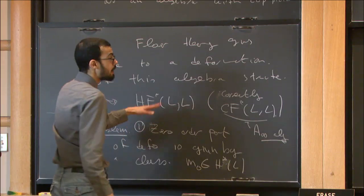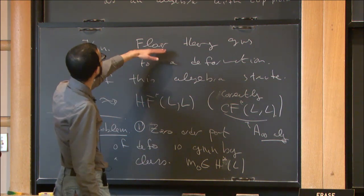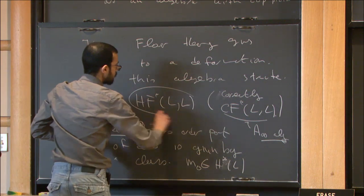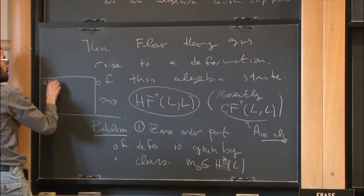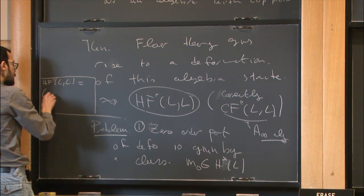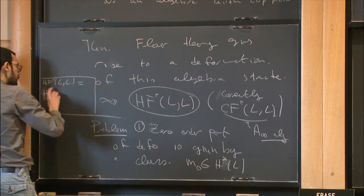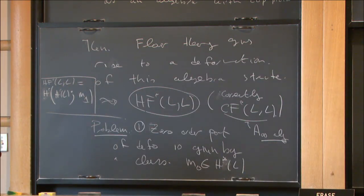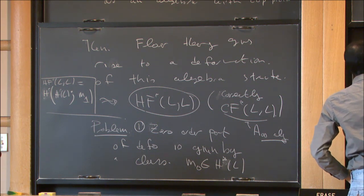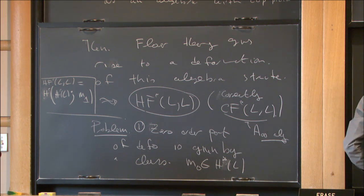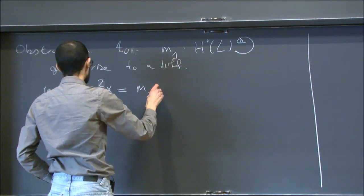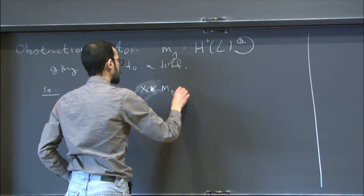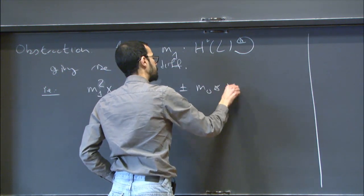To be clearer: in the framework where you work with the cohomology of L as an A-infinity algebra, Floer cohomology is the cohomology of H*(L) equipped with a new differential called M1. The obstruction means that M1² of some element x is not zero — it ends up being the commutator of x with the element M0. This is the first problem.